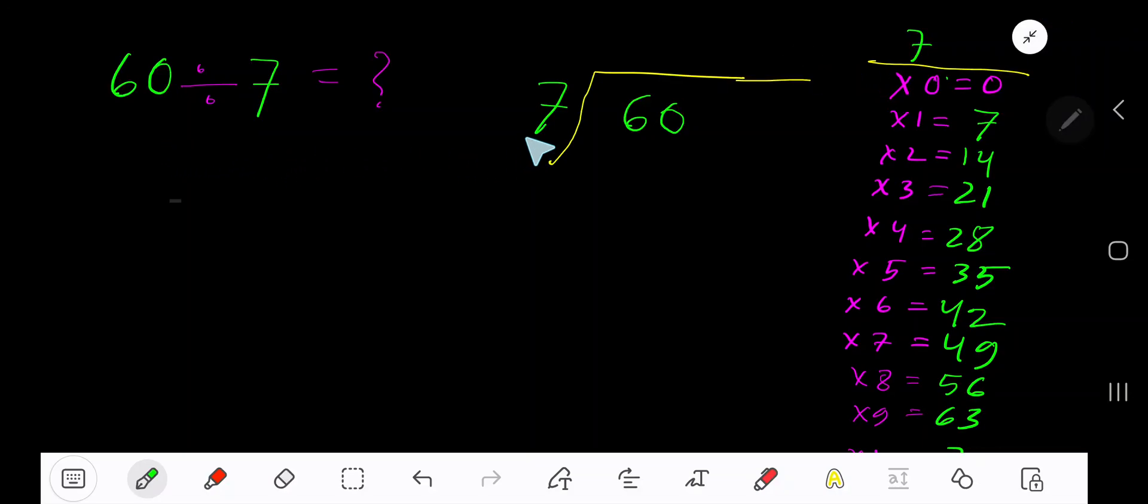60 divided by 7. Here 7 is the divisor, so we need the multiplication table of 7. 7 times 0 is 0, 7 times 1 is 7, 7 times 2 is 14, 7 times 3 is 21. To find the multiplication table of 7, just add 7 to the previous result: 0 plus 7 is 7, 7 plus 7 is 14, 14 plus 7 is 21.